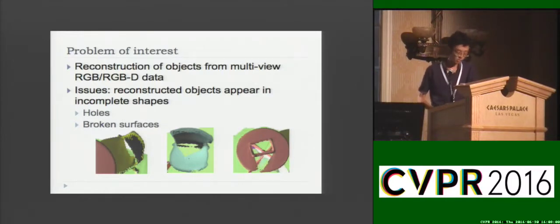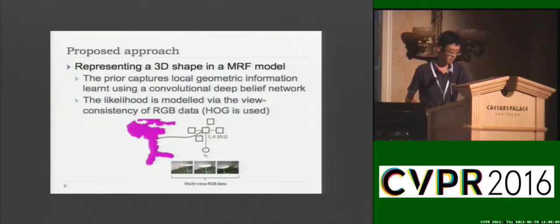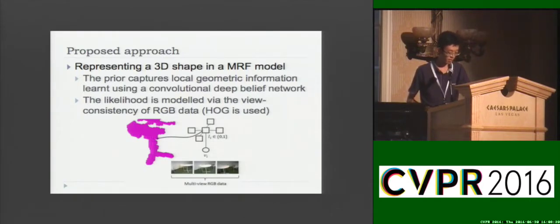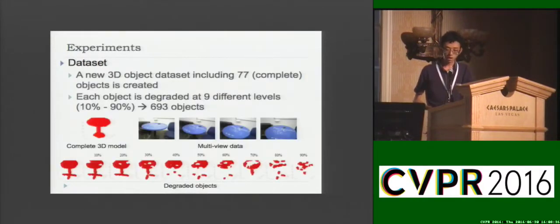You can see some examples in the figure. We try to solve this problem by modeling it as a Markov Random Field. The prior is learned from convolutional belief networks which capture the local geometric information. The likelihood is defined based on the consistency of 3D points when observed in different viewpoints. We solve the maximum a posteriori estimation using variational mean field to get a complete model.